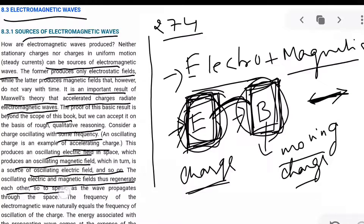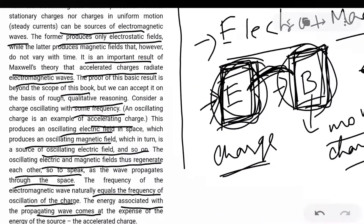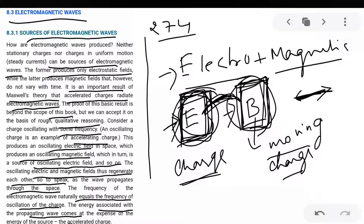The frequency of the electromagnetic wave naturally equals the frequency of the oscillating charge. The energy associated with the propagating wave comes at the expense of the energy of the source, that is the accelerated charge. The accelerated charge expends energy, and that energy goes into the energy of the propagating electromagnetic wave.